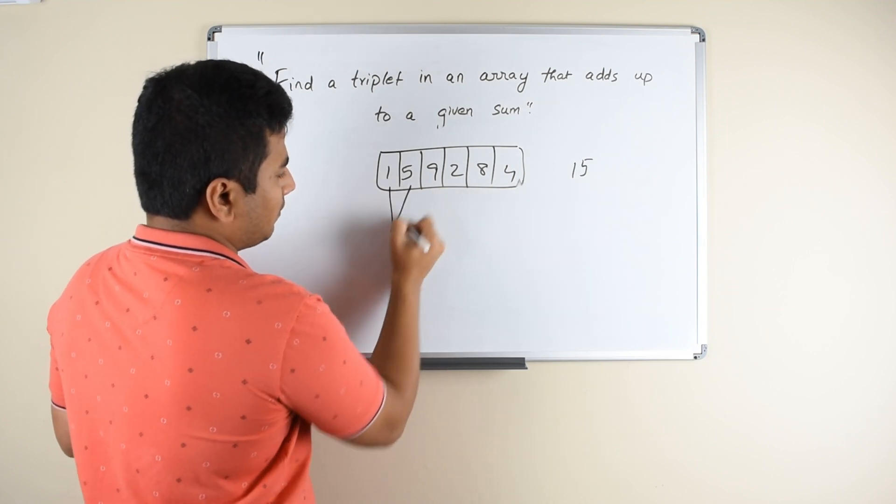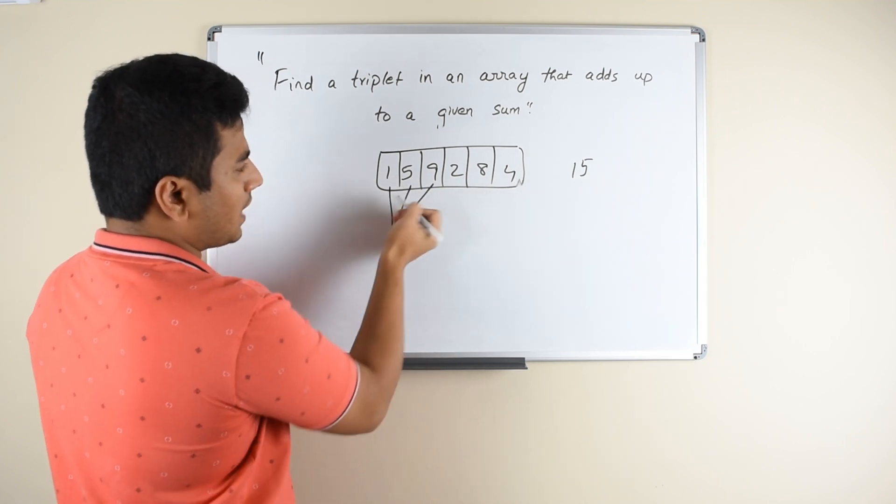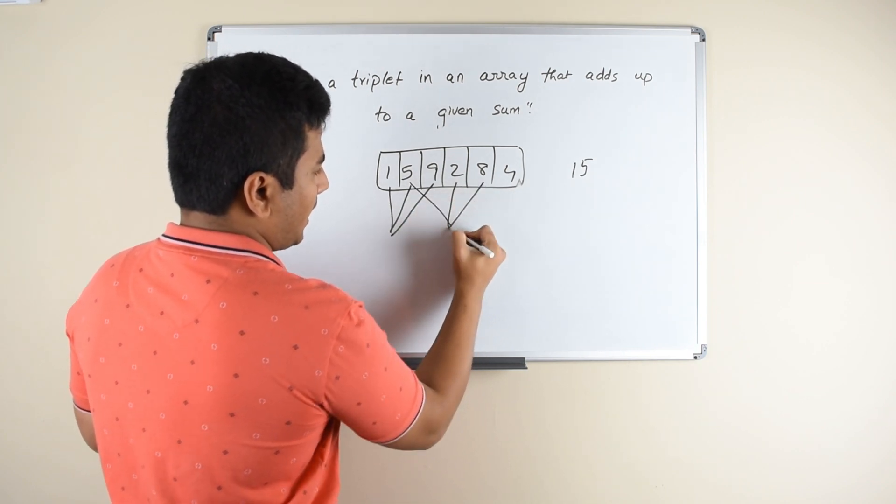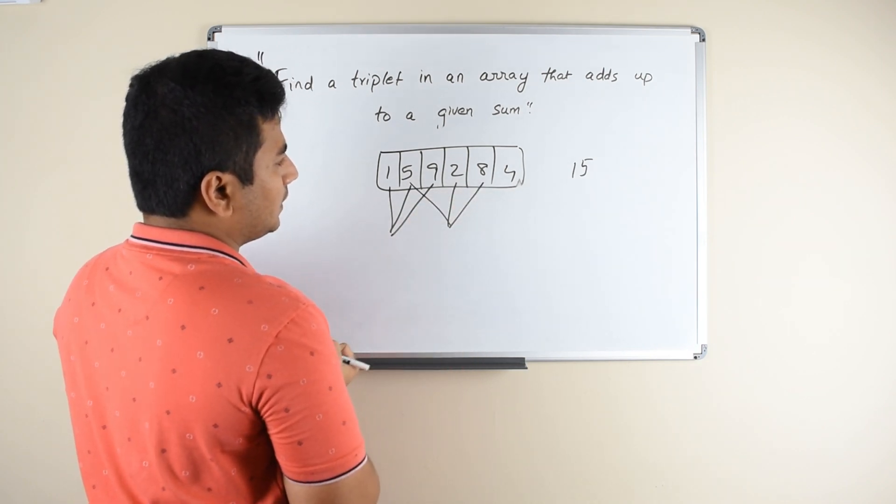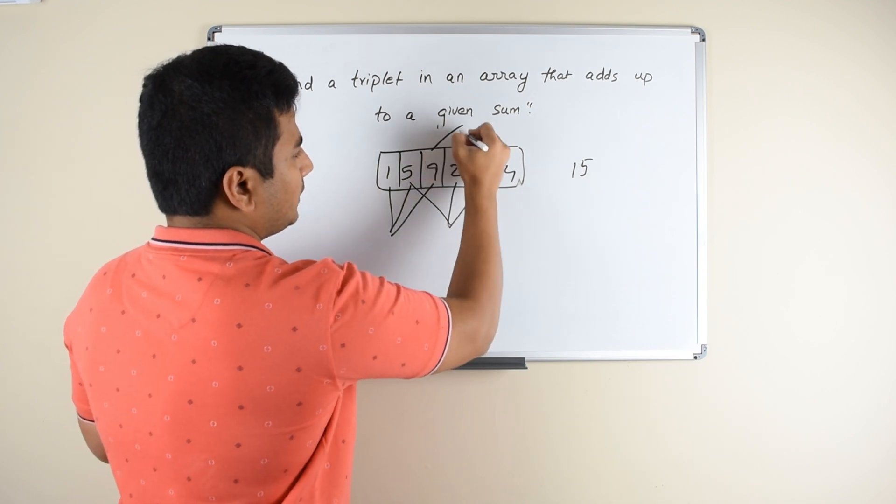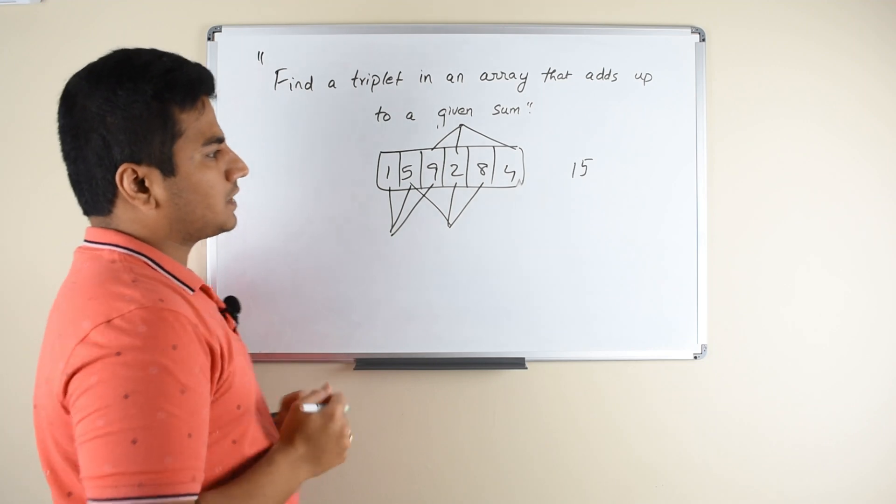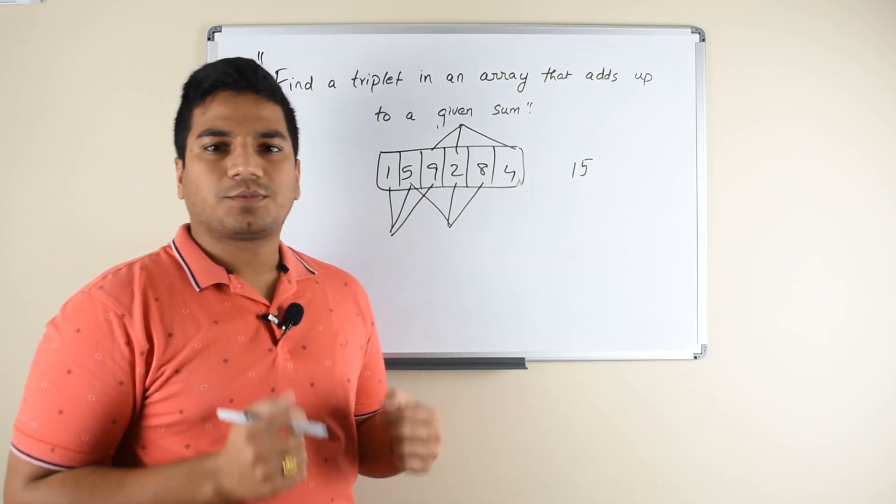1, 5, 9 - these three add up to 15. And then 5, 2, 8. And then 9, 2, 4. These are the triplets that are possible in this array which add up to a given sum of 15.